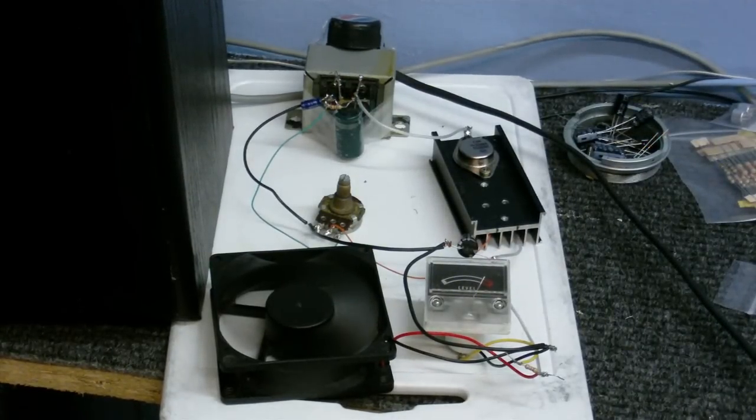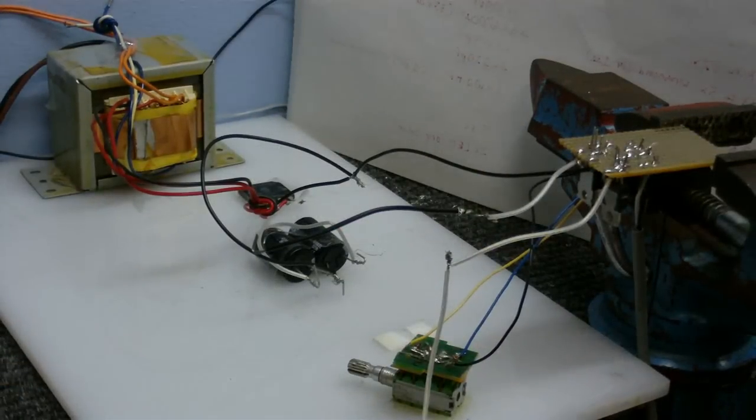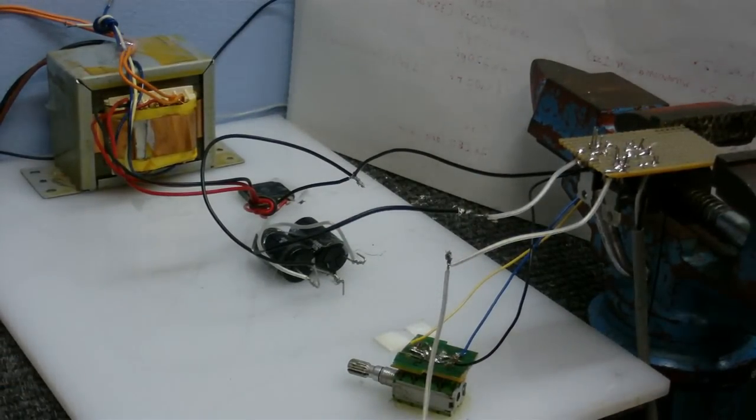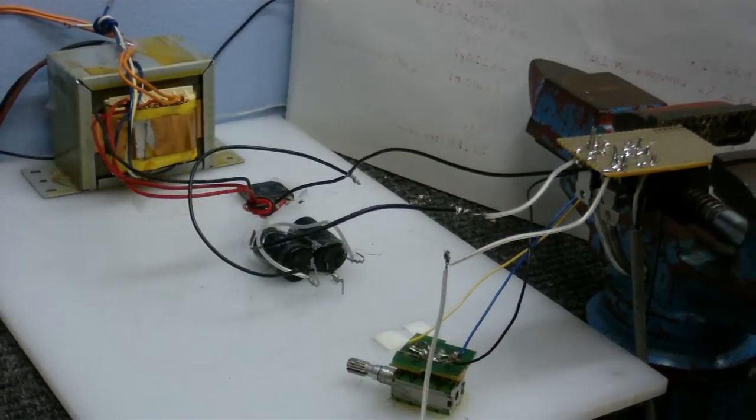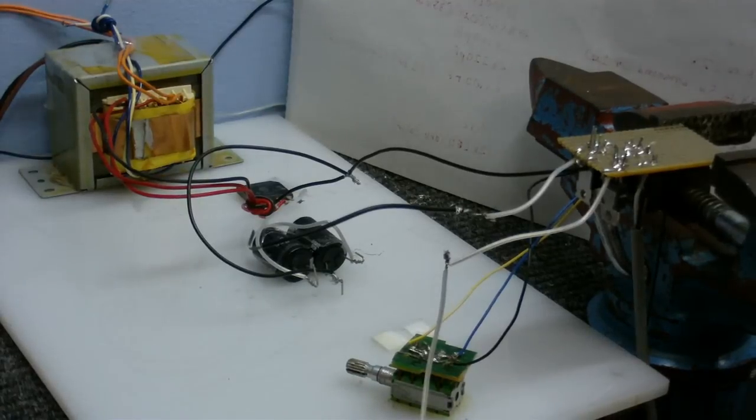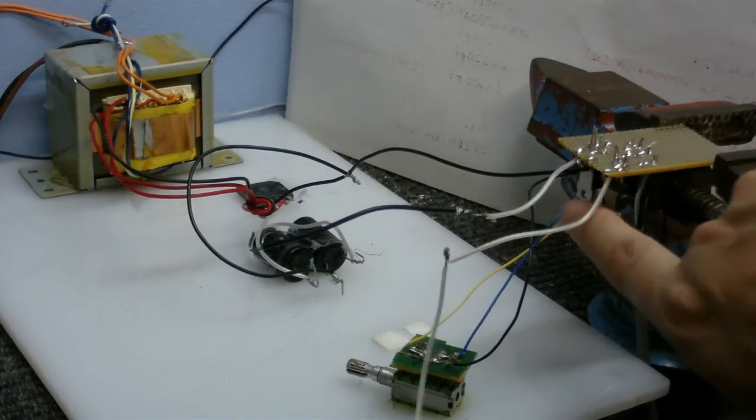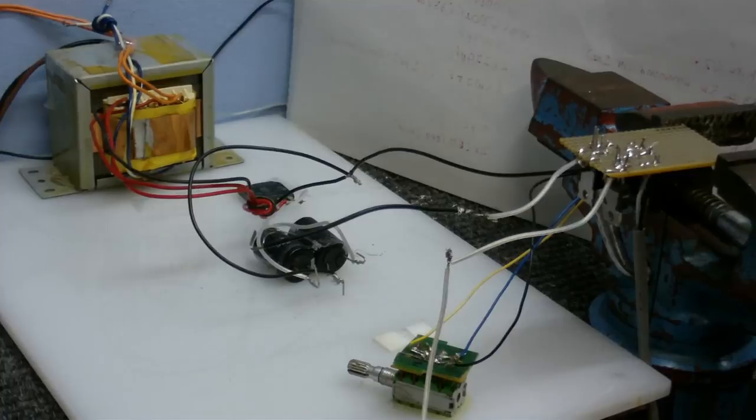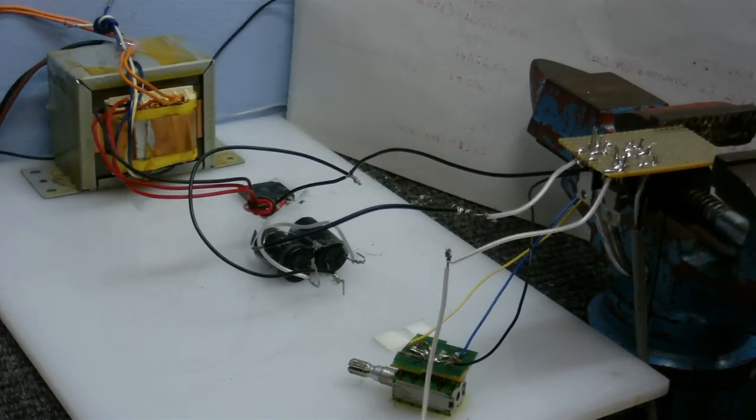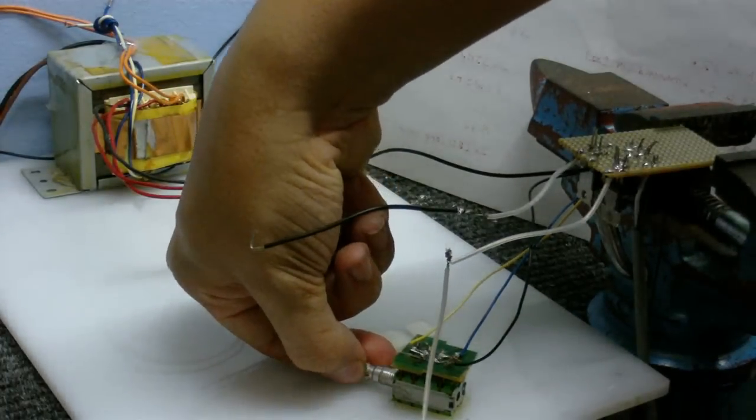As you can see it works pretty good. Now this whole mess of stuff over here is the split rail part. This split rail supply gives you positive voltage and negative voltage, and I'm using two adjustable regulator chips to do that, controlled by potentiometers which I've got here.